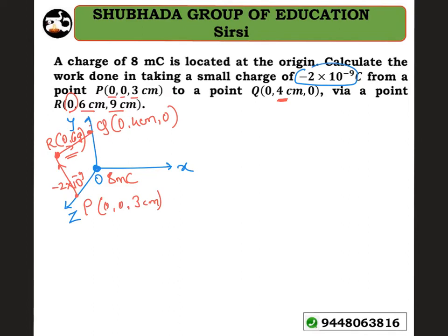As the electric field is a conservative field, the work done in moving a charge in the electric field is independent of the path chosen. It depends only on the electric potential difference between the two endpoints. So, work done W equals charge Q into potential difference.